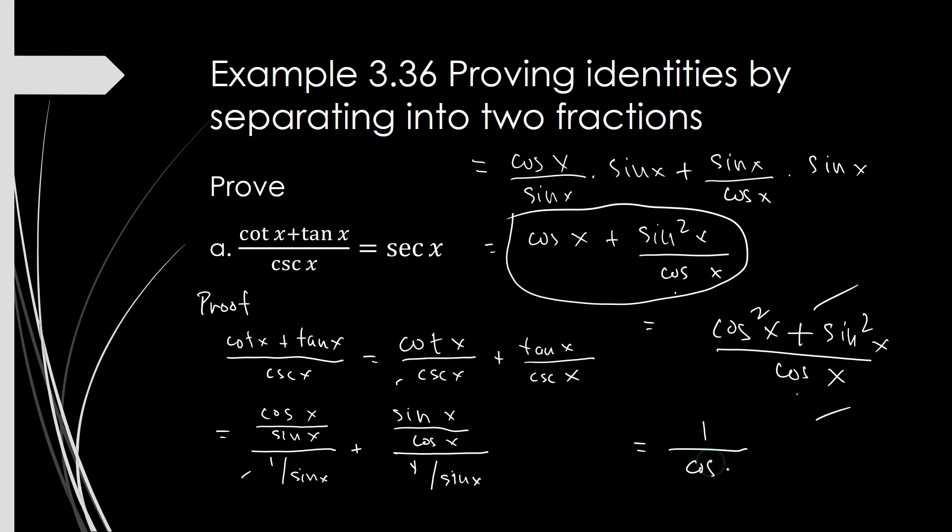And so it's equal to 1 over cosine of x. And what is this? This is secant of x. So we are done with this identity. We have shown that this is equal to secant of x.